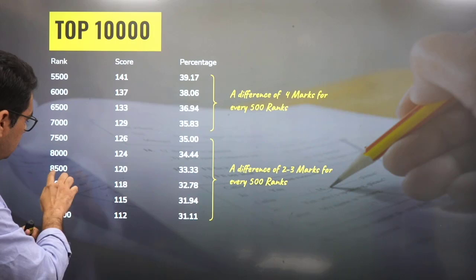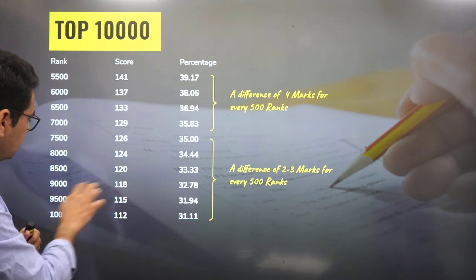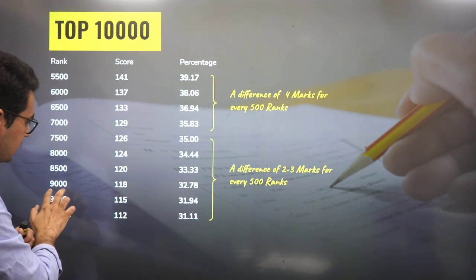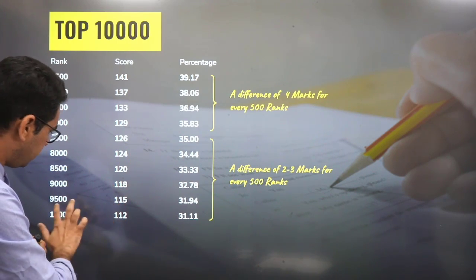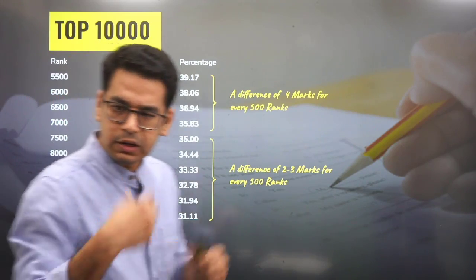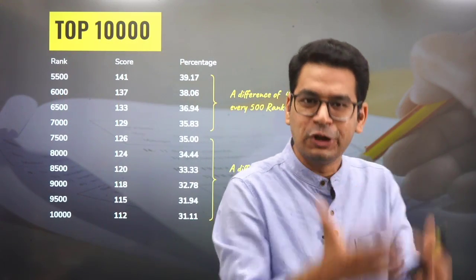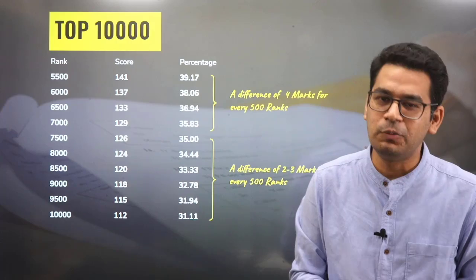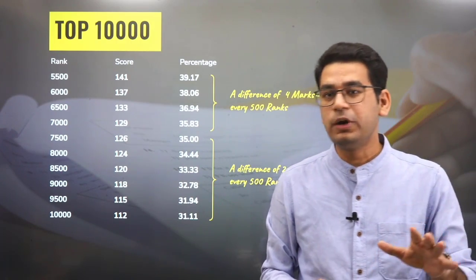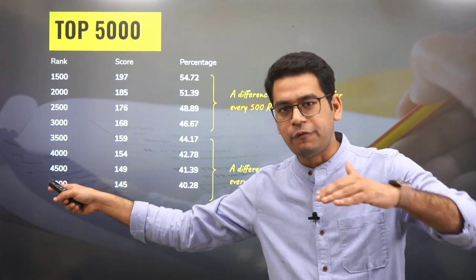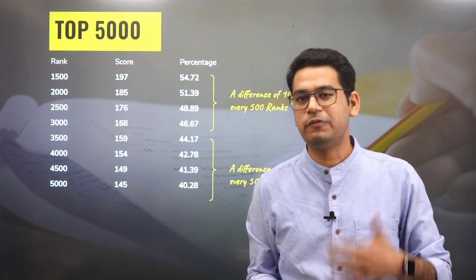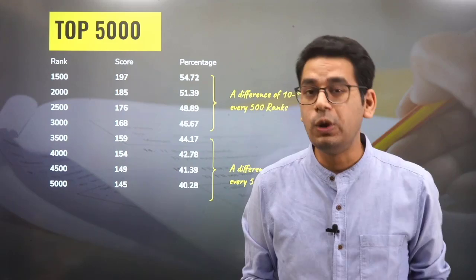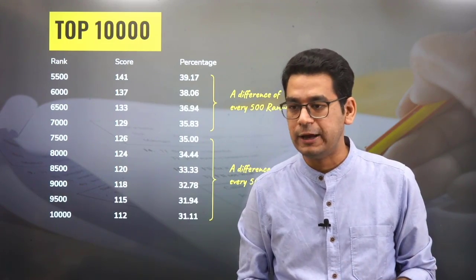If you see, 8000 was 124, 8500 was 120. From 8500 to 9000, suddenly 2 marks per 500 ranks. 9000 and 9500, 3 marks. So after every 500 chunk you come down, it is going to become more and more competitive. But the good point is, if I select the top 5000 barrier, you still require 40% marks to get into the top 5000 and get an old IIT. Maybe not a good branch, but yes, still get a good old IIT.